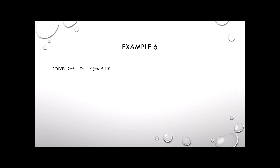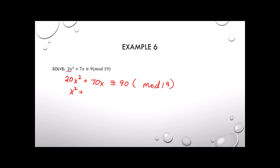Example 6 is very similar — pause and try it on your own first. The first step is finding the inverse of 2 mod 19, which is 10. Multiplying through by 10 gives 20x squared plus 70x congruent to 90 mod 19. Reducing: 20 becomes 1, and 70x reduces to 13x, but we want an even coefficient, so we add 19 to get 32x. You could leave it as 70x, but we want an even number to complete the square. And 90 mod 19 reduces to 14.